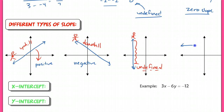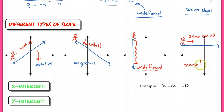The last type is a horizontal line, which has a slope of 0 — imagine your skier going across with zero speed. So the big idea is to recognize a positive slope, a negative slope, an undefined slope for a vertical line, and a slope of 0 for a horizontal line.